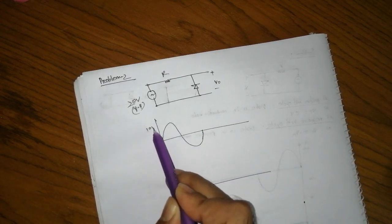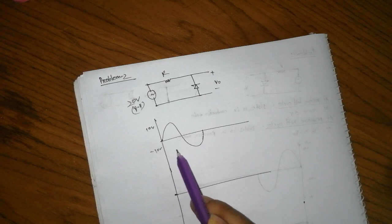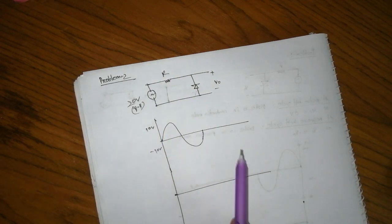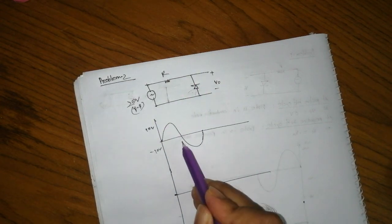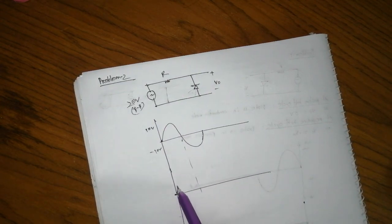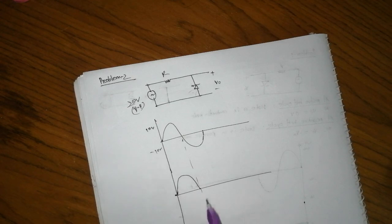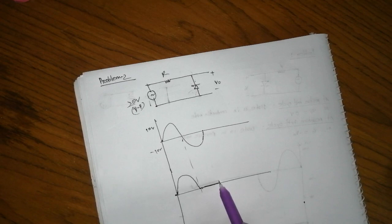6 6 10 10 10 positive half cycle reverse open. Positive half cycle, negative short. Positive half cycle okay.